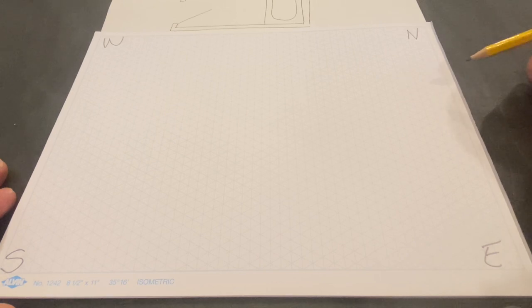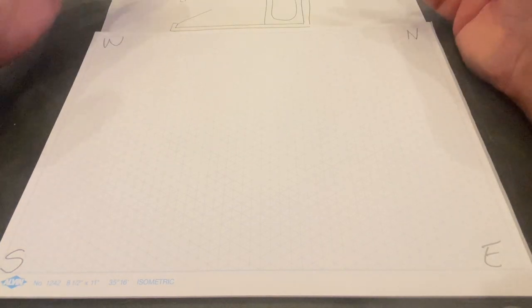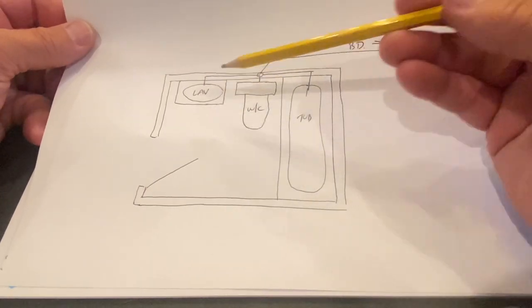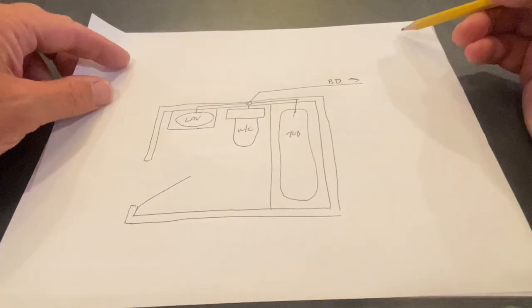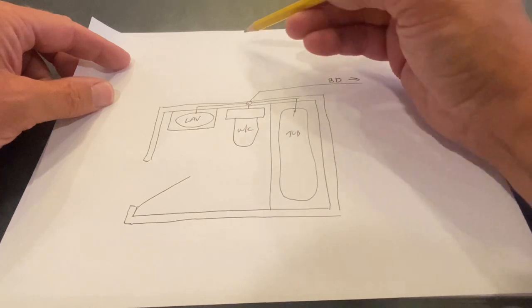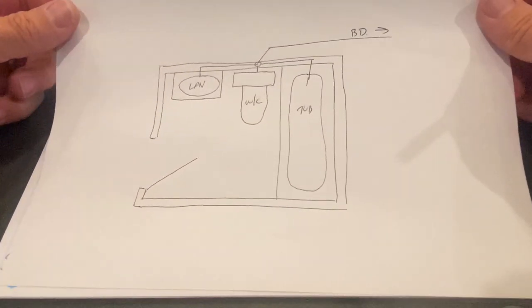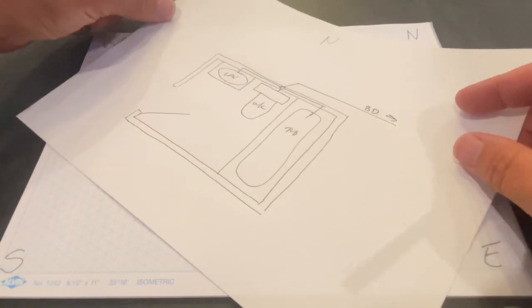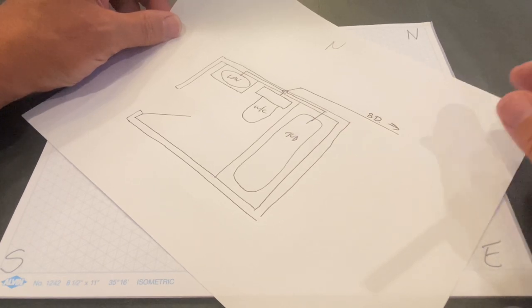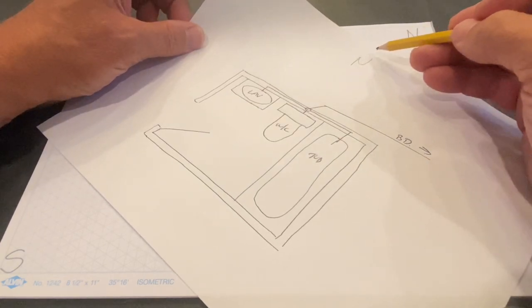All right guys, let's draw this. All right, here we go ladies and gentlemen, I'm going to try to make this as painless yet as educational and as easy as possible. Here is our three-piece bathroom. I'm sorry you don't see it, but let's put it right there. Here we have a laboratory, water closet, and the tub. This is our north here.